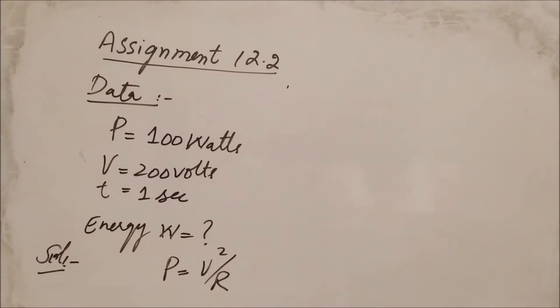According to the statement of Assignment 12.2, there is a coil whose power is 100 watts when 200 volts potential is applied for 1 second. We cut this coil into two equal pieces and connect these two pieces in a parallel combination with the voltage of 200 volts.